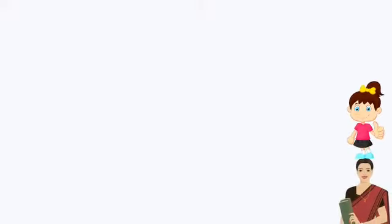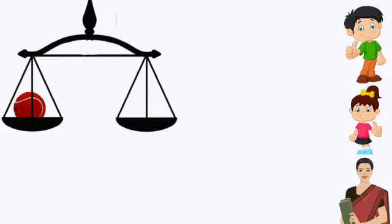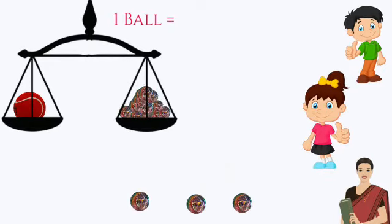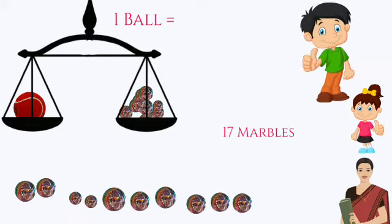Thai told Sonu and Nandu to measure the weight of the ball with the help of marbles. When Sonu measured the weight of the ball, it was equal to 17 marbles. And when Nandu measured the weight of the same ball, it was equal to 10 marbles.